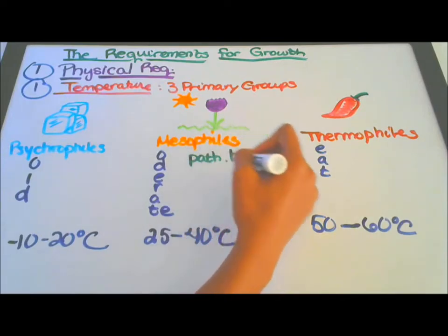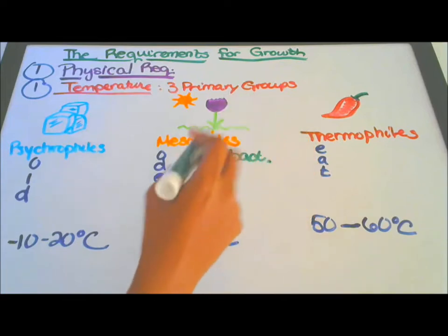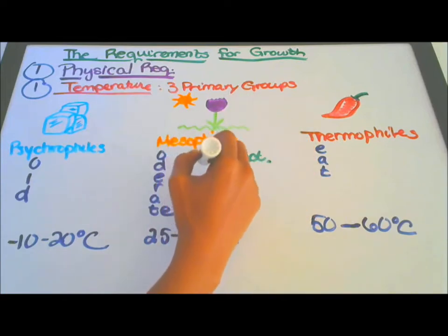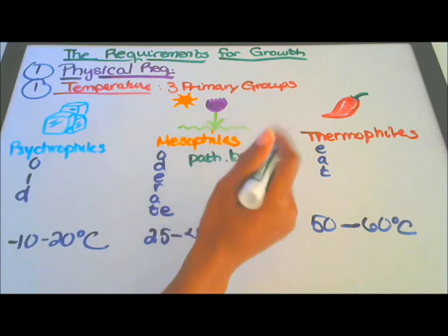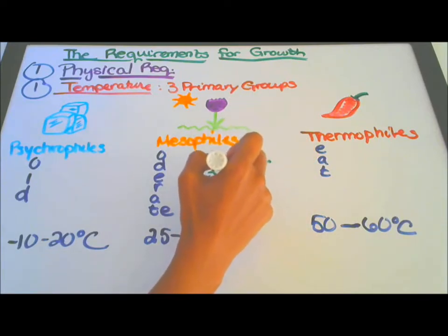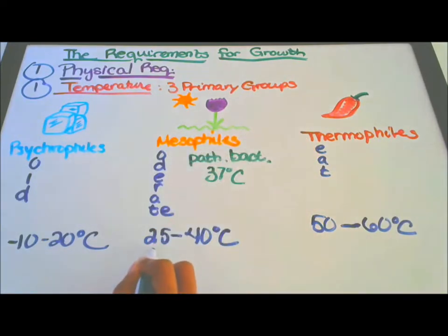That's bacteria that can cause harm. Their optimal temperature, their perfect temperature of growth is 37 degrees Celsius. That fits right in this range.